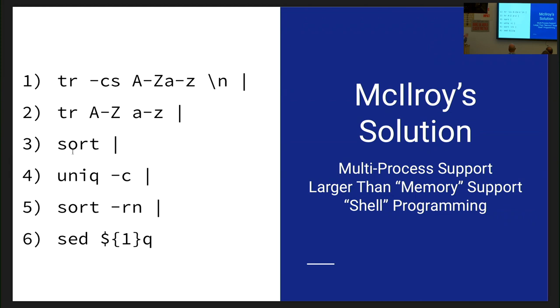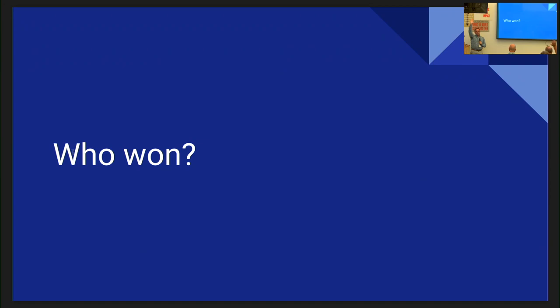What's interesting in the modern day is that this is a multi-process solution — he's starting several processes. It's actually almost a distributed system. We could connect machines via the network and pipe data from one to the other. If you squint at that, it's basically a MapReduce thing — it's very Googly. It also supports problems that are larger than memory; he doesn't have to pull everything into memory at once. So here's the question: who won?